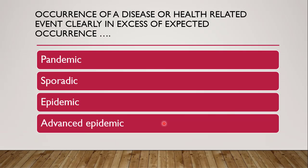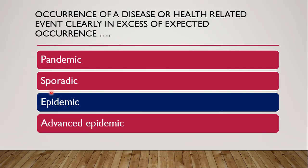Next question: occurrence of a disease or health-related event clearly in excess of expected occurrence — that means it was expected to be a certain level but now it exceeds that. The options are pandemic, sporadic, epidemic, or advanced epidemic. The correct answer is epidemic. When the disease is beyond the expected occurrence, it is called an epidemic disease.